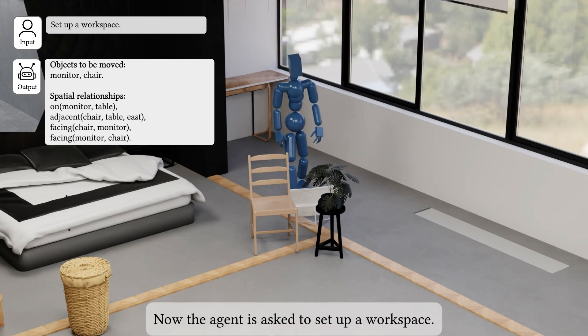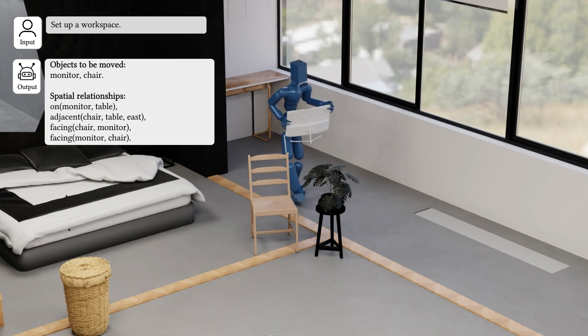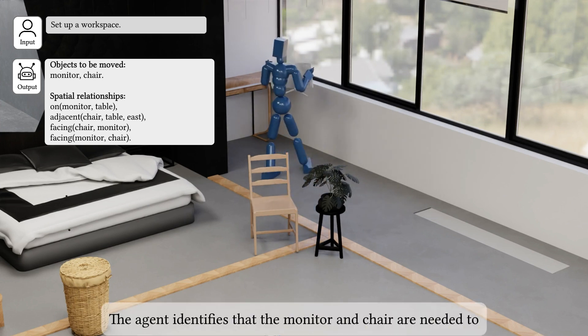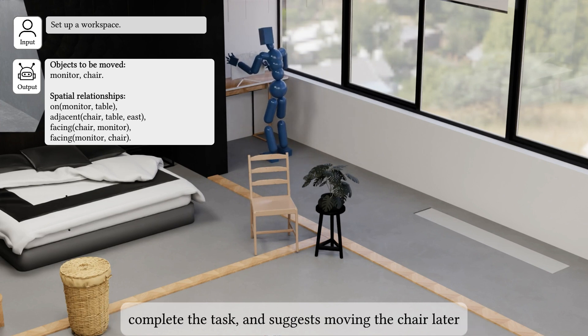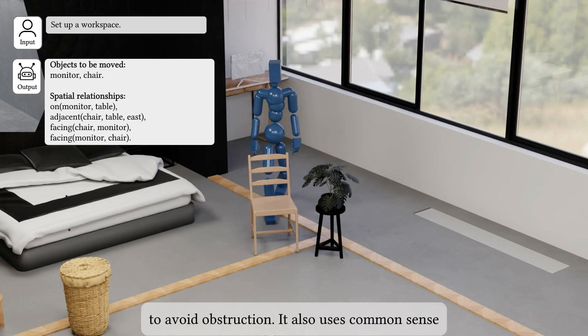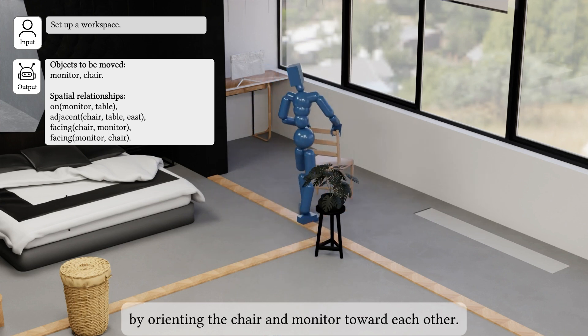Now the agent is asked to set up a workspace. The agent identifies that the monitor and chair are needed to complete the task and suggests moving the chair later to avoid obstruction. It also uses common sense by orienting the chair and monitor toward each other.